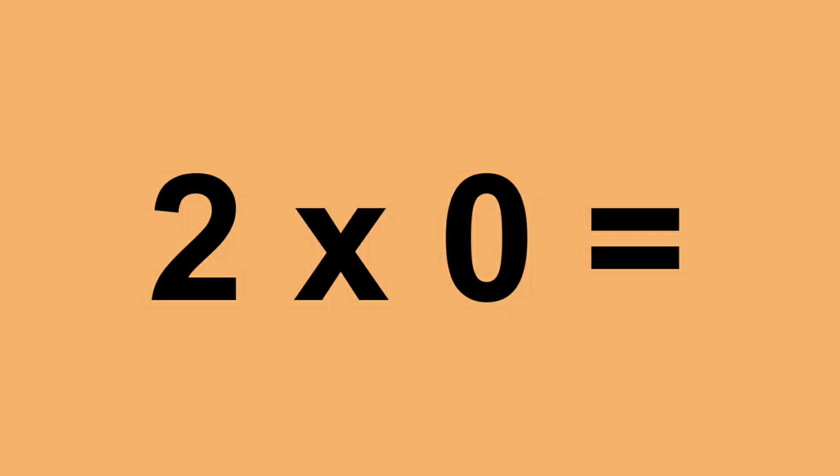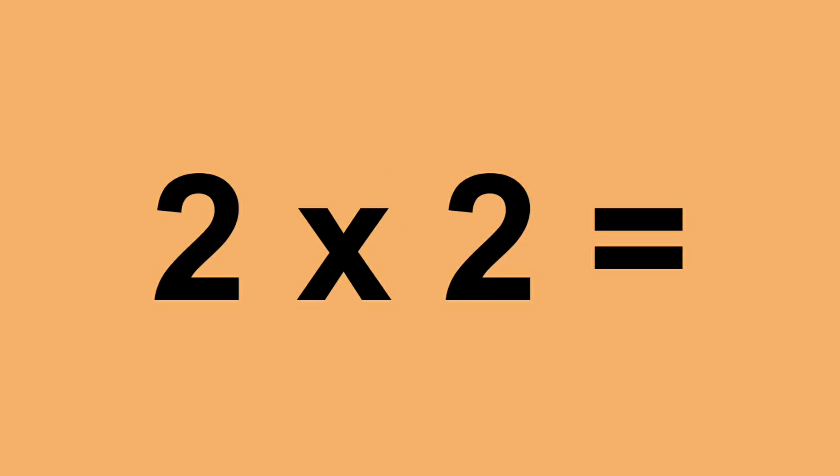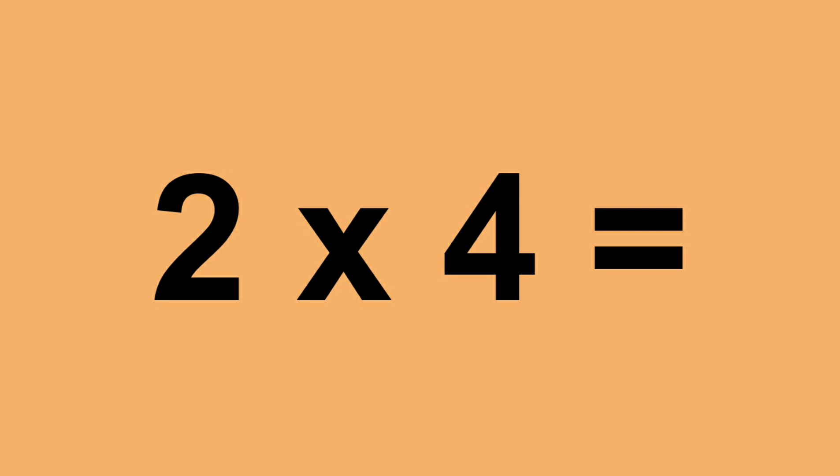Two times zero equals zero. Two times one equals two. Two times two equals four. Two times three equals six. Two times four equals eight.